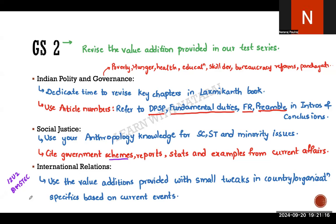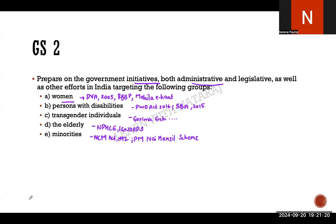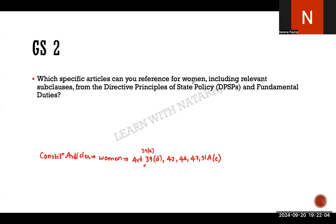Most of the work is already done. For vulnerable groups in GS2 — women, persons with disabilities, transgender, elderly, religious minorities, linguistic minorities — ensure you incorporate all relevant government initiatives: administrative, policy, legislative, and judicial judgments. Also bring in key constitutional articles: DPSPs, Fundamental Duties, and wherever relevant, connect them to your answers. That is basically what you need to do for these portions.